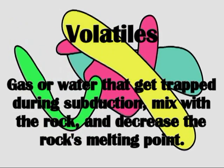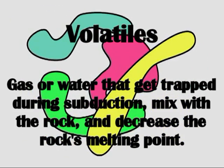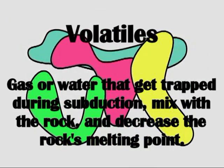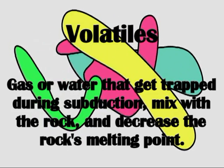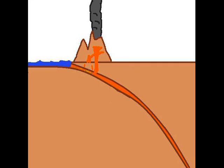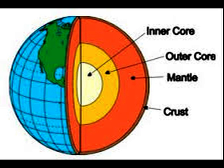Volatiles are gas or water that get trapped in the rock as it melts. These volatiles lower the melting point of the rock and allow it to push up, creating a volcano on the surface. The volatile in question is the water from the ocean that got trapped between the plates as it subducted.